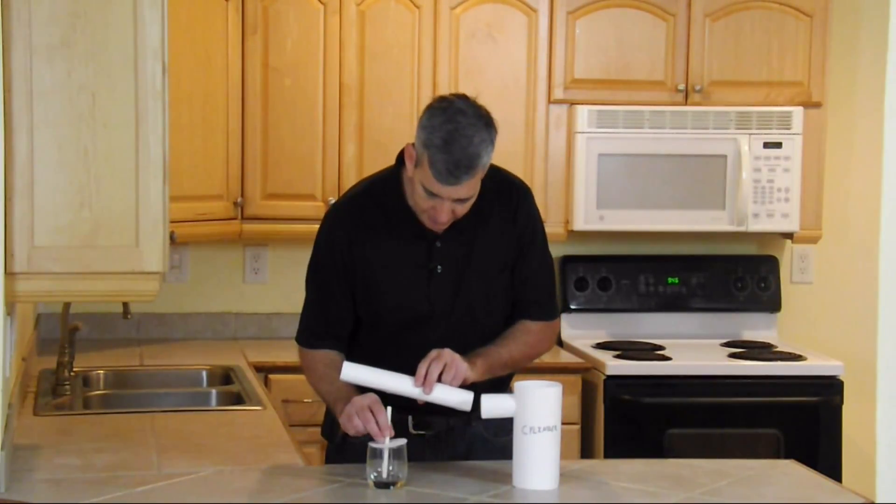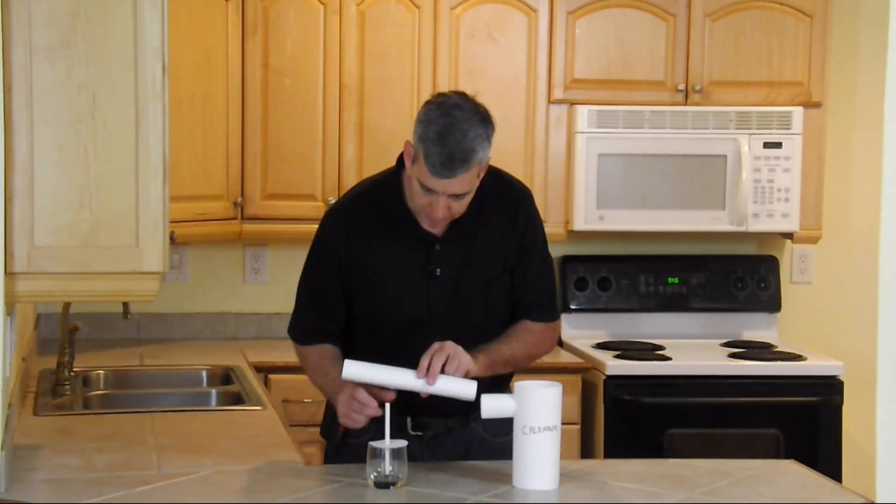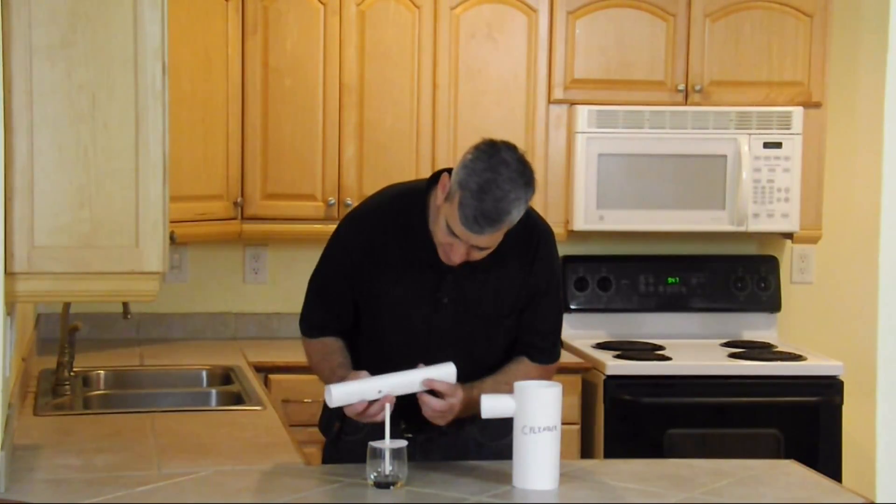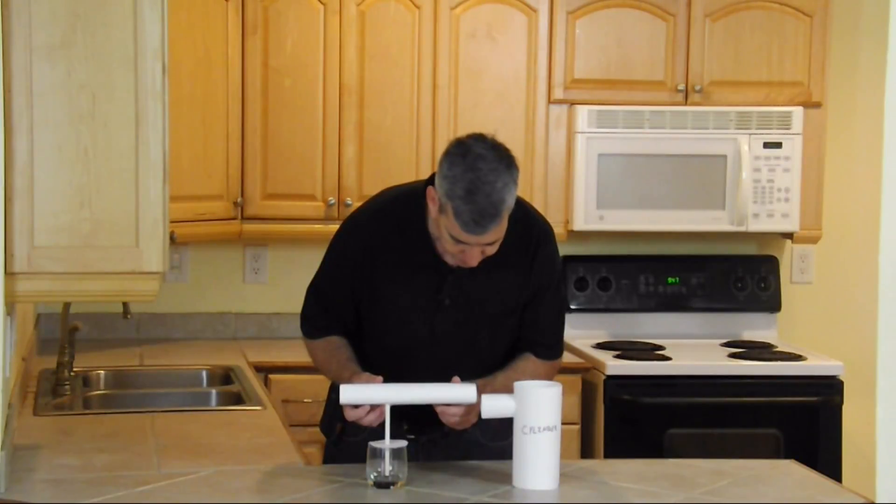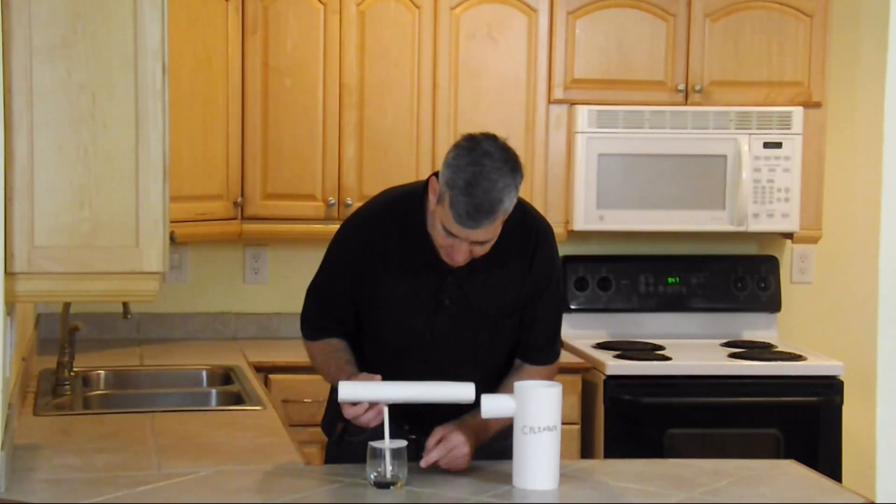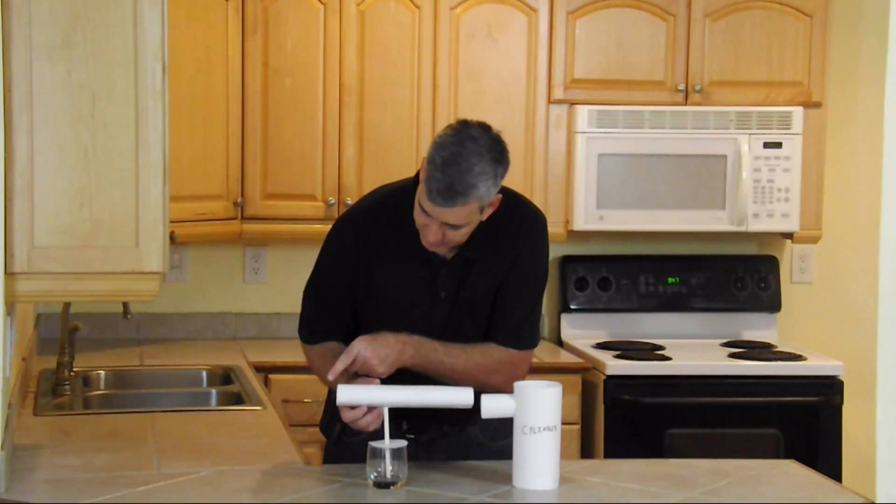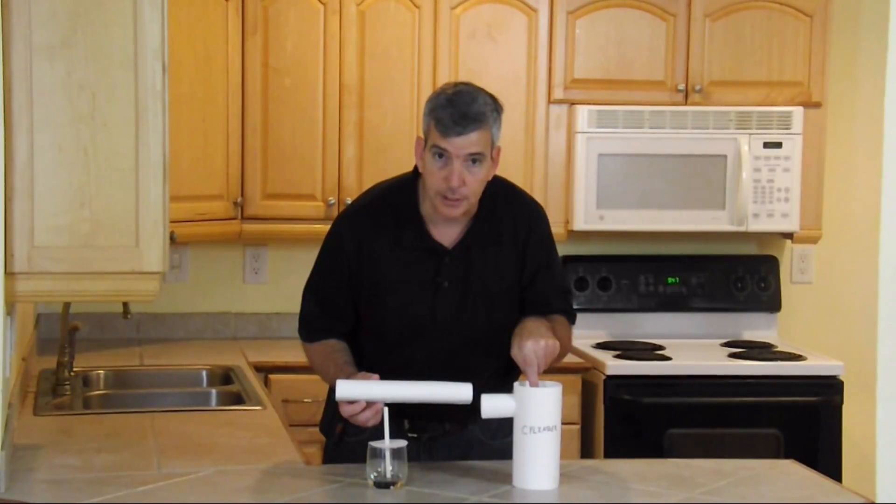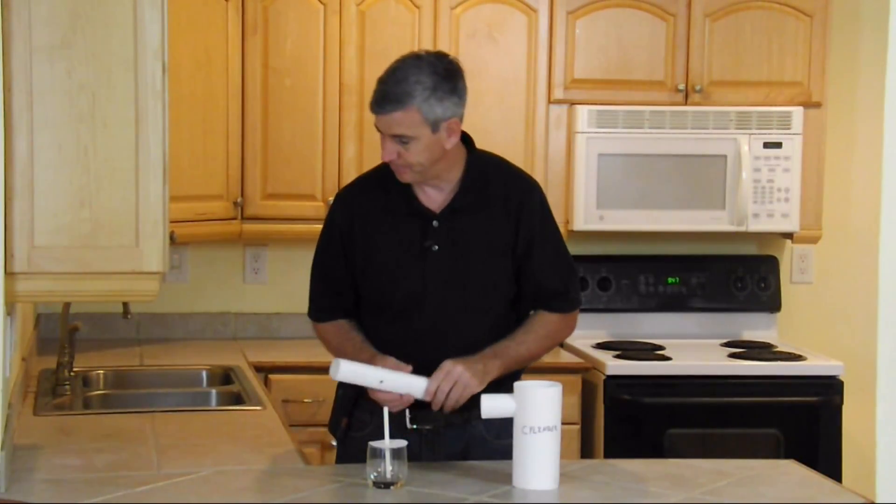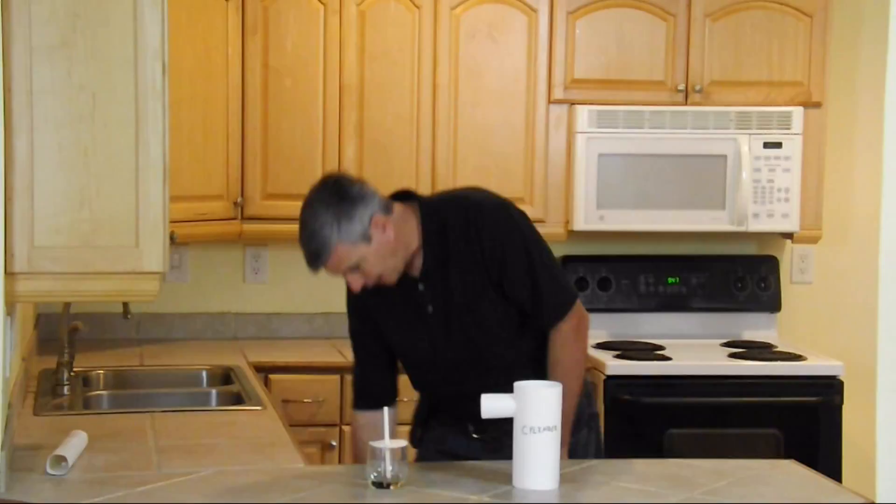Right here we have a fuel pickup or an emulsion tube, if you will, that fits inside of our tube. And what we want to do is get this fuel mixed with this air into this cylinder. How do we do that?